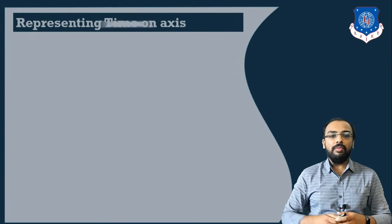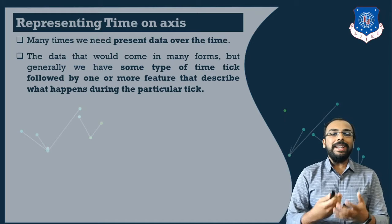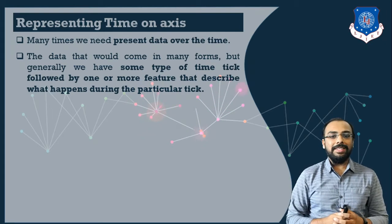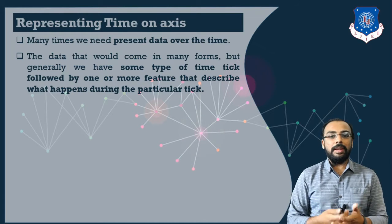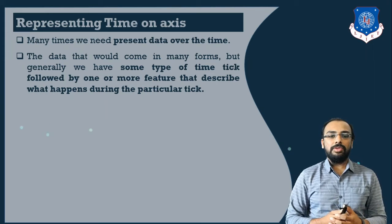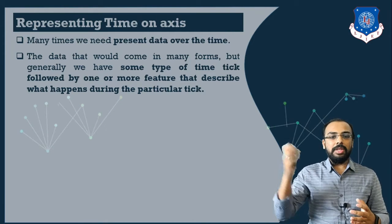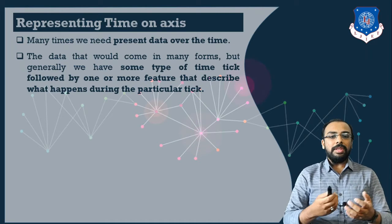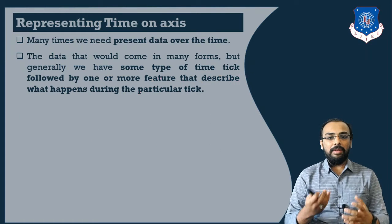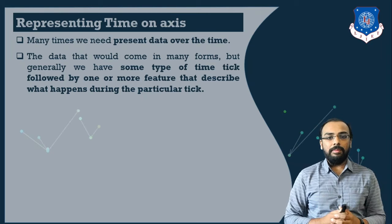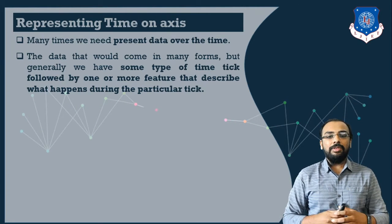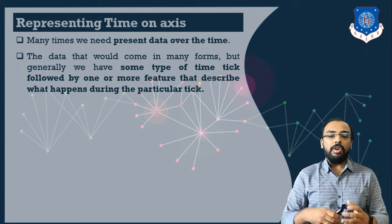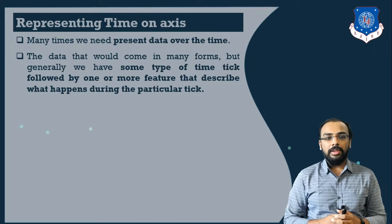Next, we will see how we can represent time on an axis. Consider a visualization case where a company needs to show a particular scenario — for example, sales of a product and determining at which time interval revenue was high. Time plays a crucial role here. The data can come from many forms: a database, a text file, or a CSV file, with specific time ticks followed one after another.